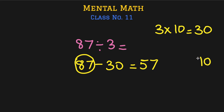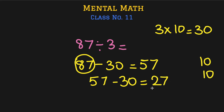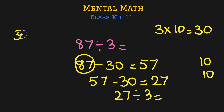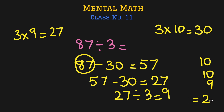We subtract 30 again from 57: 57, 47, 37, 27. Keep another 10 in mind. Now we have 27 divided by 3 — from our multiplication facts, 3 times 9 is 27, so that's 9. Add all the parts: 10 plus 10 plus 9 equals 29. We arrive at the same answer as with the long division method.